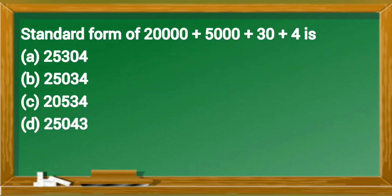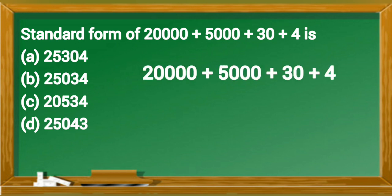Standard form of 20000 plus 5000 plus 30 plus 4 is 25034. So option B is right answer.